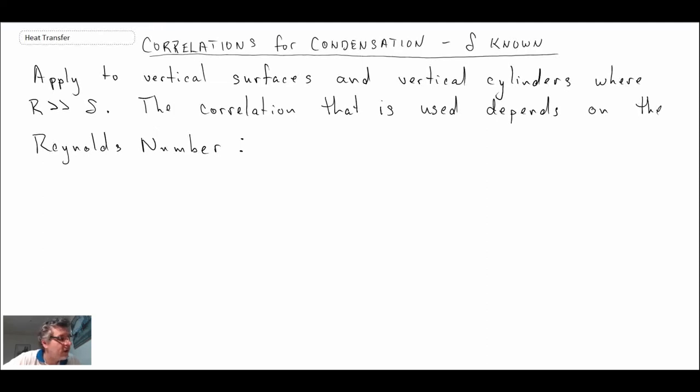We're going to introduce a new Reynolds number that we will use in these correlations. If you recall from an earlier lecture, we were talking about Reynolds number being defined in terms of the mass flow rate of the condensate running down our vertical surface.